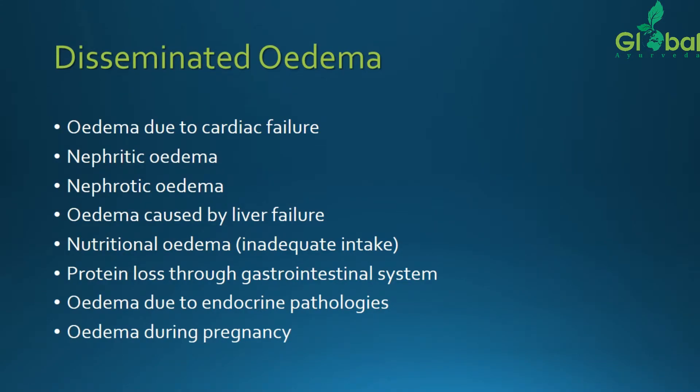Certain examples of disseminated edema. Disseminated edema means the type of edema which will spread throughout the body — from a localized region, a generalized region, or a regionalized region, it will spread throughout the body.